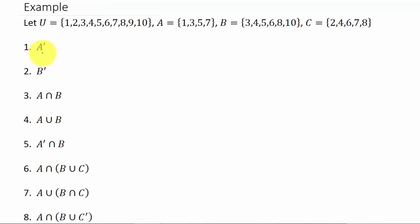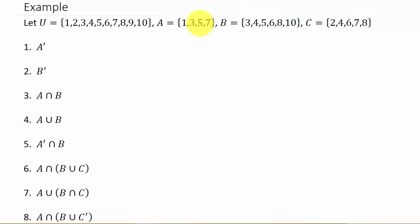So we want to find the complement of A. The universal set contains the numbers one through ten. Here's set A: one, three, five, seven. And we have set B and set C as well. So we want the complement of A — remember, that's all the elements that are not in set A but are in the universal set.